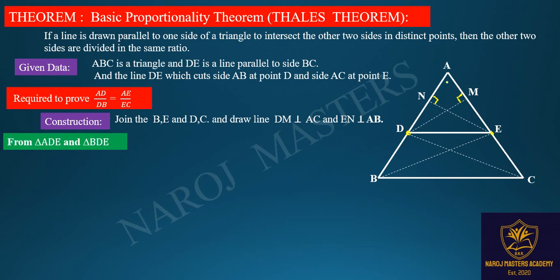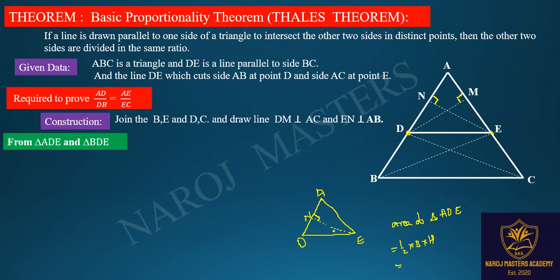From triangle ADE, take this triangle first. The height is EN, which is perpendicular, at point N, and the base is AD. So the area of triangle ADE equals half into base into height, which is half into AD into EN.